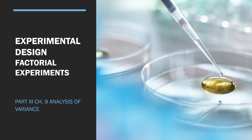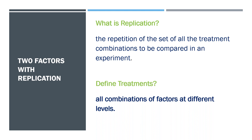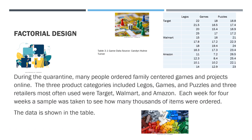Welcome to part three and the final chapter of this semester for chapter nine in experimental design. We'll look over factorial experiments, also known as two factors with replication. Replication is the repetition of all the treatment combinations that can be compared in an experiment. Treatments are all combinations of factors at different levels. Here's an example of a factorial design.